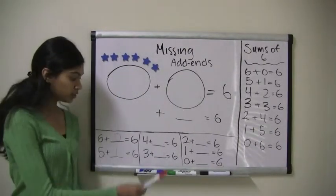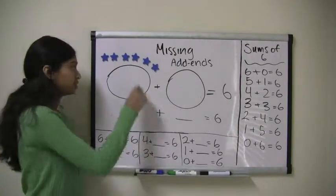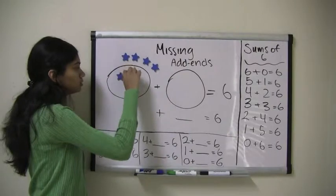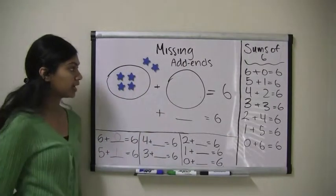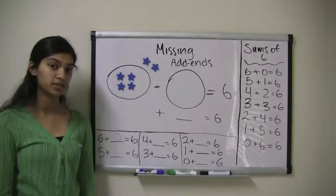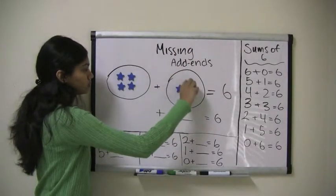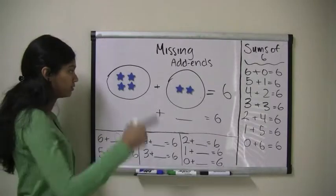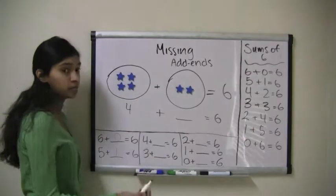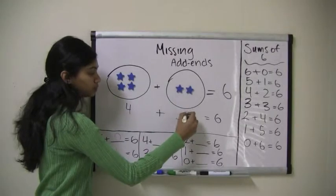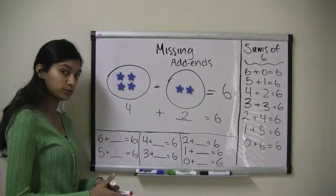Our next problem is 4 plus what equals 6? Well, we have to put 4 stars in the first area: 1, 2, 3, 4. And how many stars does that leave us to put in the second area? 1, 2. So, we have 1, 2, 3, 4 plus 1, 2, which equals 6. So, 4 plus 2 equals 6.